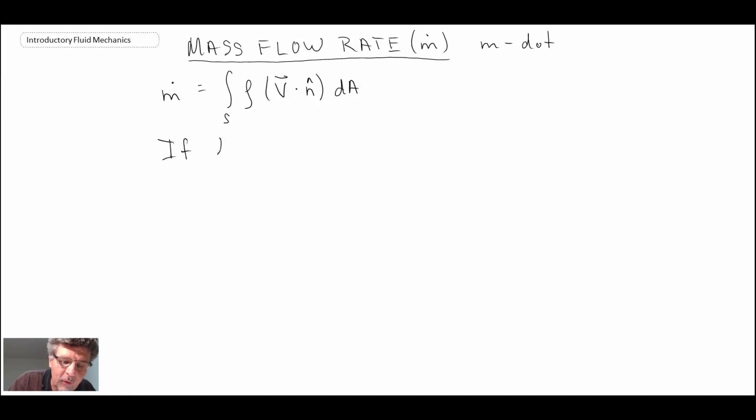It turns out that if rho is equal to a constant, then you can pull the density out of the integral, and you would have something that looks like this.